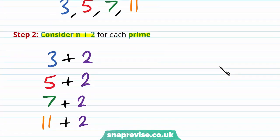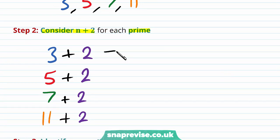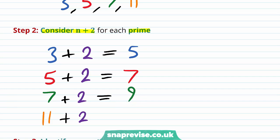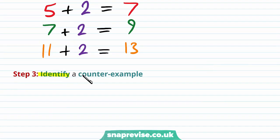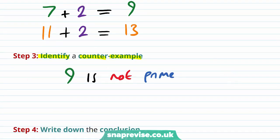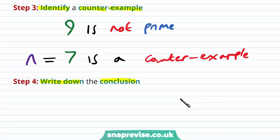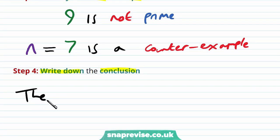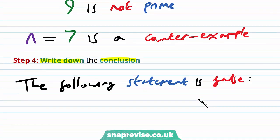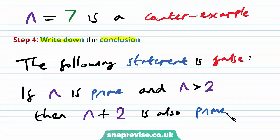All we need to do is find one of these numbers that is not prime. The first gives 5, which is prime. The second gives 7, which is prime. The third gives 9, and the last gives 13, which is prime. Our third step is to identify a counterexample: the number 9 is not prime. Therefore n equals 7 is a counterexample. Our fourth step is to write down the conclusion: the following statement is false — if n is prime and n is greater than 2, then n plus 2 is also prime — because we found a counterexample.